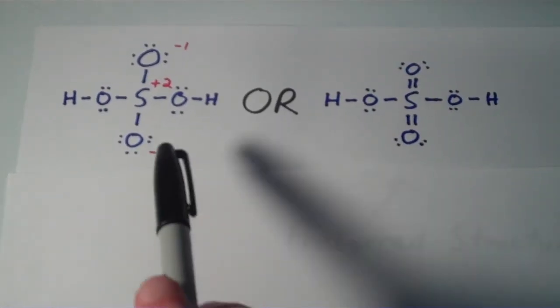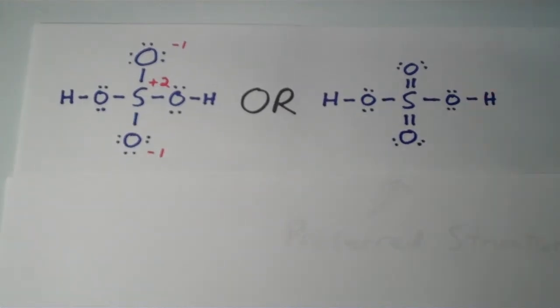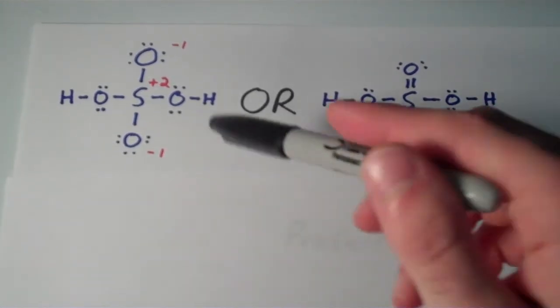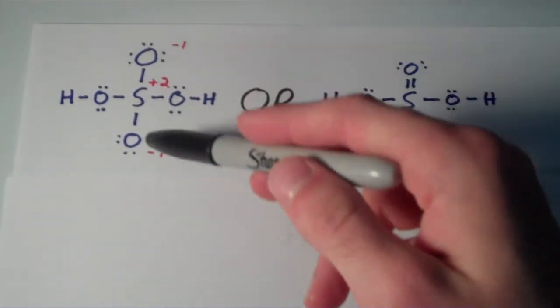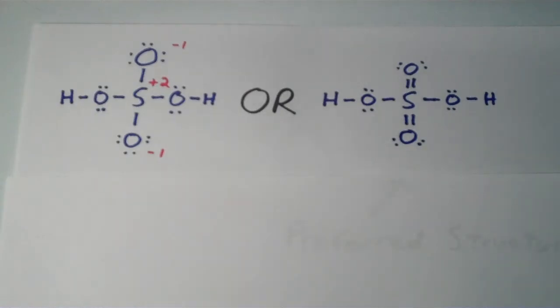In the structure on the left, the sulfur atom has an octet, but it also has this mess of formal charges in which the sulfur has a plus 2 formal charge, and each of the oxygen that is not also bonded to a hydrogen has a formal minus 1 charge.